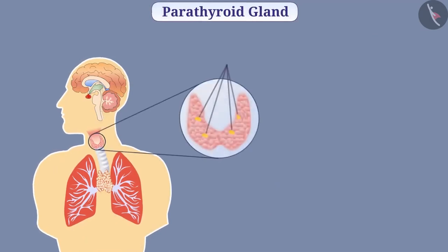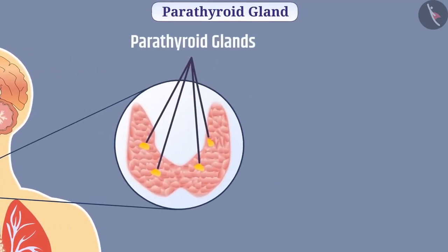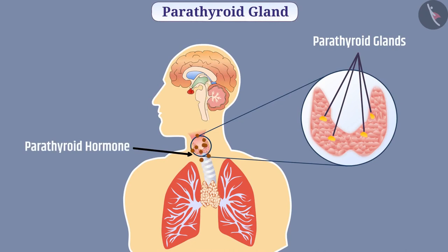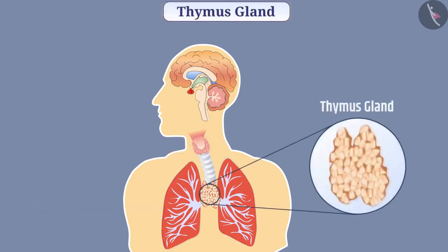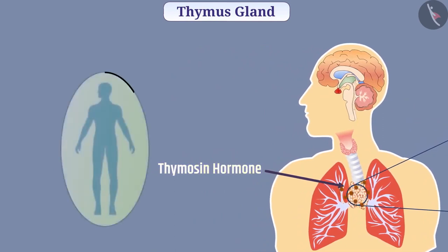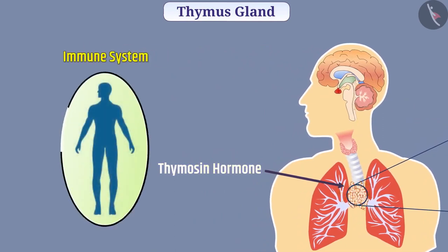There are four parathyroid glands present on the posterior surface of the thyroid gland, which secrete parathyroid hormone. Parathyroid hormone increases calcium levels in the blood. The thymus gland is present between the two lungs. It secretes thymus hormone, which assists in the development of the immune system.